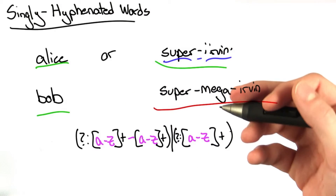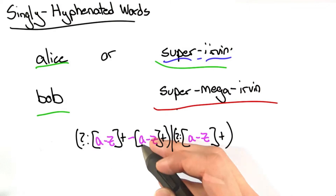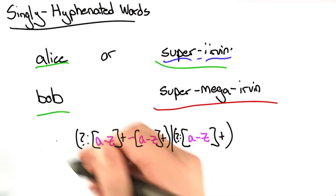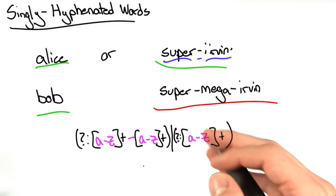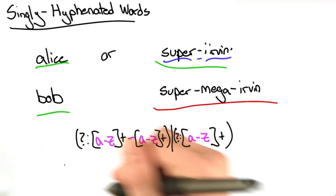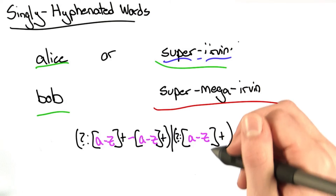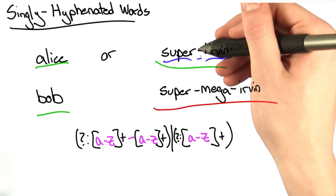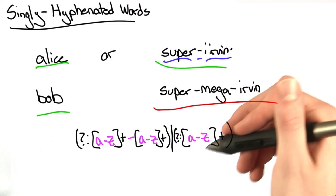And here we go with the regular expression. Notice that I listed the hyphenated words first, because the way findall works is that it first checks to see if this matches the left side of the OR operator and then the right side. I'd rather have it return the hyphenated word super-urban, instead of first checking if the word matches just 'super', then seeing that the hyphen doesn't match anything, and then returning 'urban' separately.